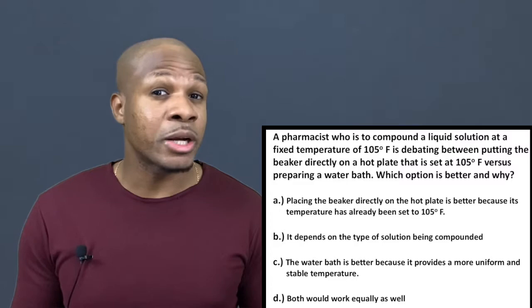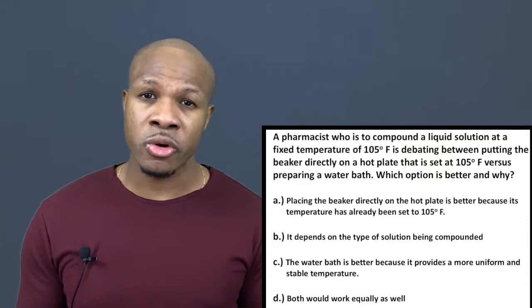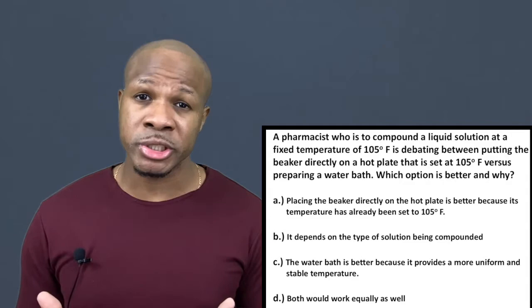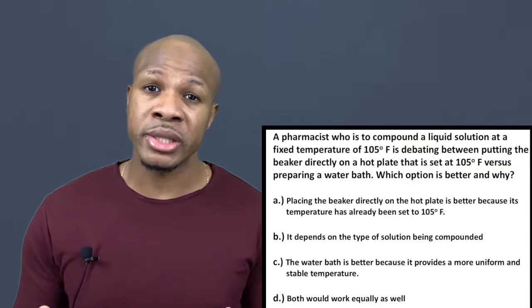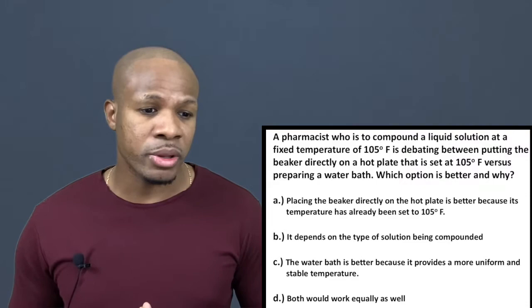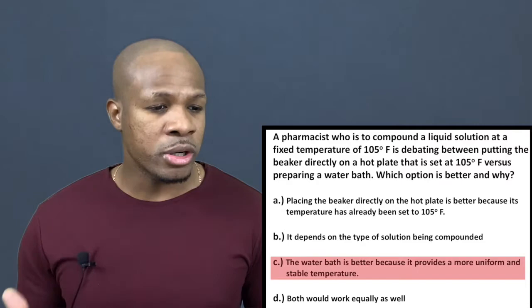Water has very good insulating properties: if the hot plate temperature fluctuates, that won't directly cause a fluctuation in the water bath because water doesn't change temperature instantly. Water has a high specific heat, requiring a lot of energy to raise its temperature. So once the water reaches 105°F, it stays there stably. The hot plate acts more like a conductor, while the water bath acts as an insulator, keeping temperature stable for compounding. The correct answer is C: the water bath is better because it provides a more uniform and stable temperature.